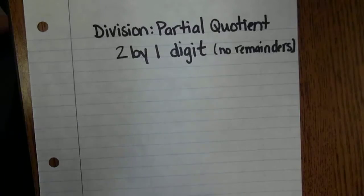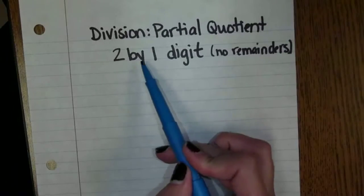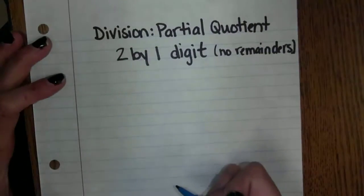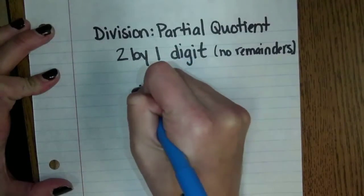Another way to solve division problems is using the partial product. This problem will show a 2 by 1 digit division problem with no remainders. Our problem that we're going to start with is going to be 75 divided by 3.